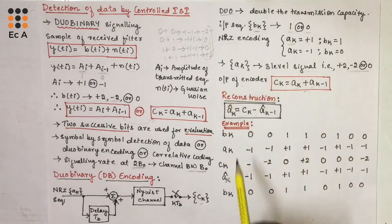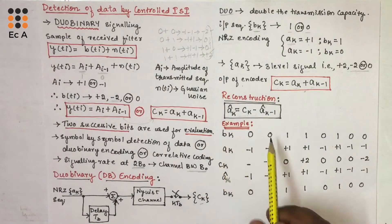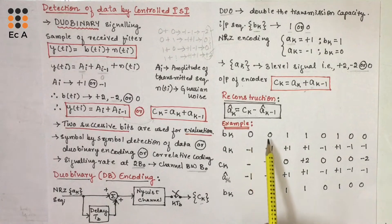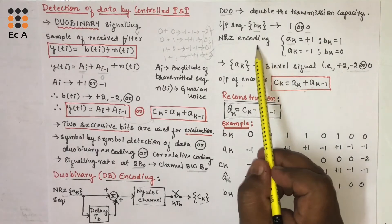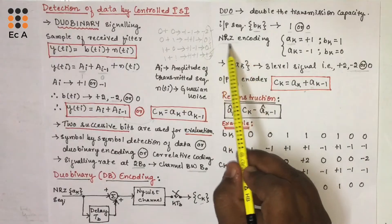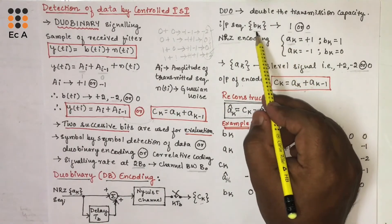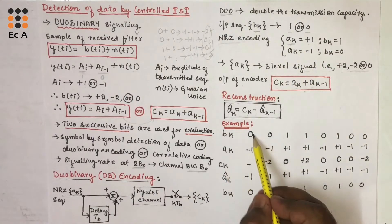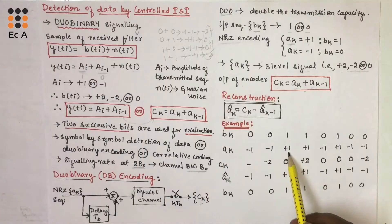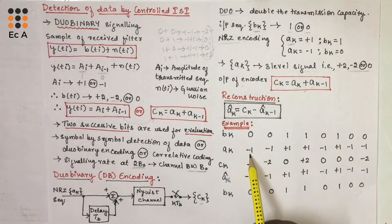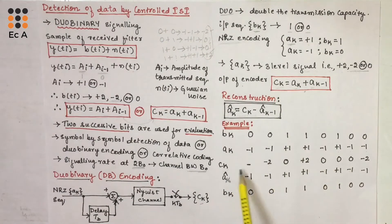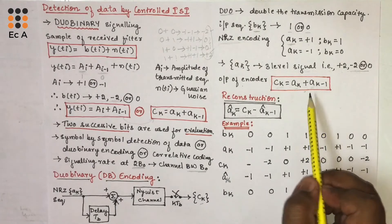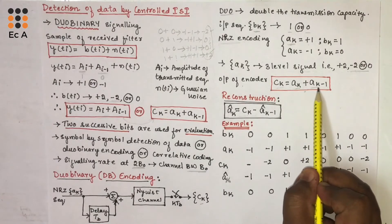To understand this process, let us consider an example where input sequence BK is: 0, 0, 1, 1, 0, 1, 0, 0. The first step is to convert that sequence into NRZ format, representing BK in terms of AK. For 0 we write -1 and for 1 we write +1, giving AK as: -1, -1, +1, +1, -1, +1, -1, -1. The output of the encoder is CK = AK + AK-1, where AK is the present bit amplitude and AK-1 is the previous bit amplitude.